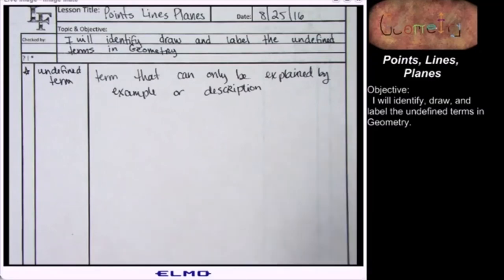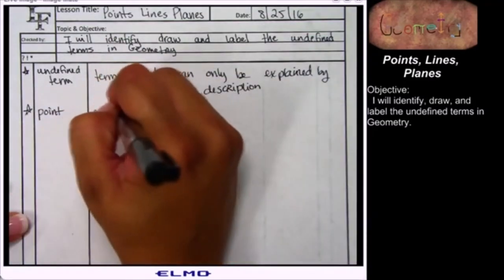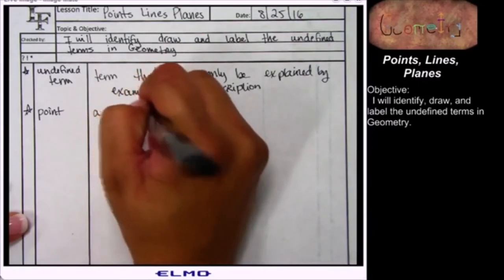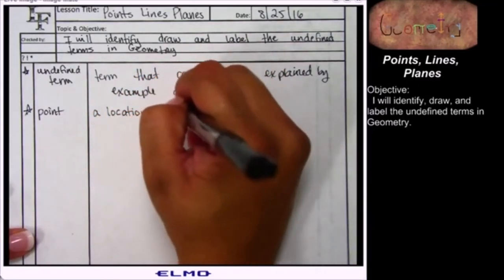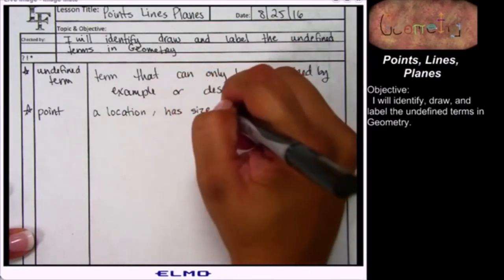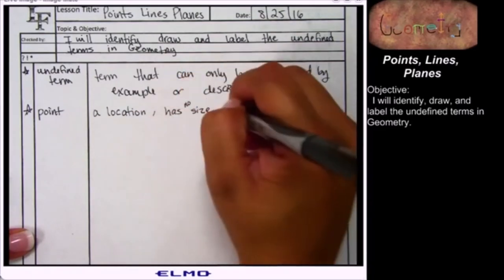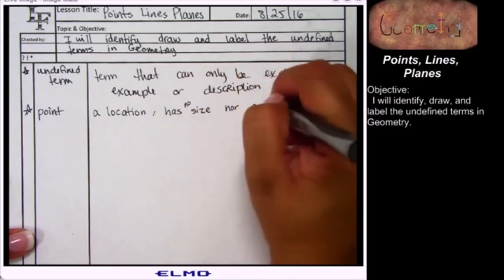Let's give you the first undefined term: point. The only way to describe what a point is is to say it's a location. I can tell you that this location is not going to have a size, nor is it going to have a shape.